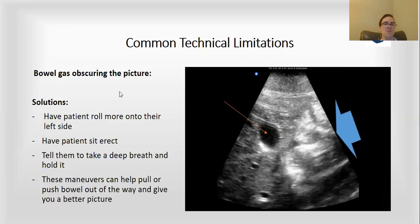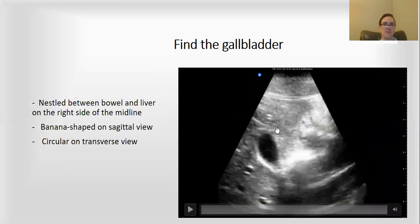All these maneuvers are really important for helping us to get the kind of image that we want. This image right here, the orange arrow is showing us a cross-section of the gallbladder, and here's all this bowel gas, and over here is the liver architecture. You can see it nestled in between the bowel gas and the liver.